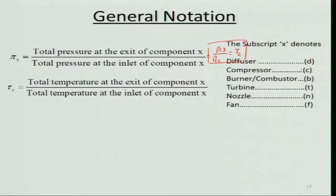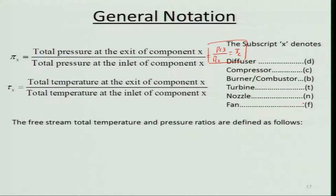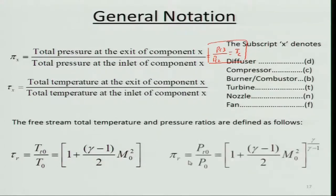The free-stream total temperature ratio is τ_r = T_t0 / T = 1 + (γ−1)/2 · M₀², and the total pressure ratio is π_r = P_t0 / P = [1 + (γ−1)/2 · M₀²]^(γ/(γ−1)), from the isentropic relationship expressed in terms of flight Mach number M₀.